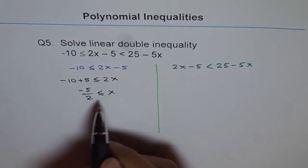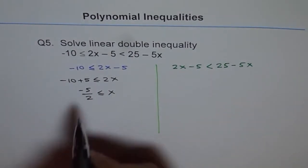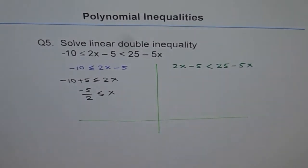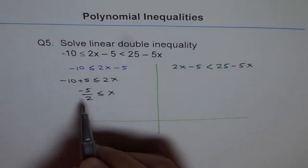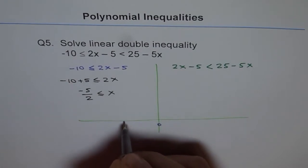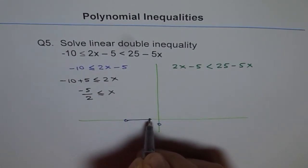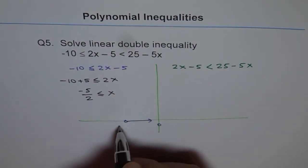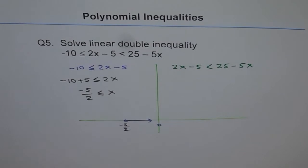So on a number line, let's say this is our number line. We get a solution on this side, which is that x is greater than minus 5 by 2. Let's say this is 0, and minus 5 by 2 is here. So the solution here is like this, where this is minus 5 over 2.